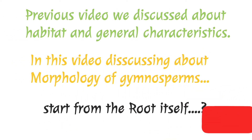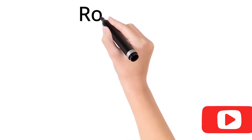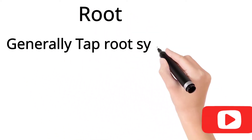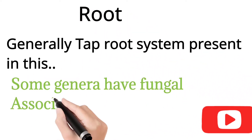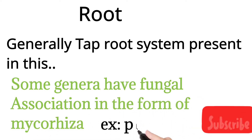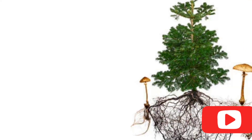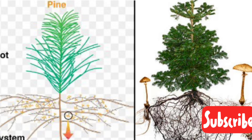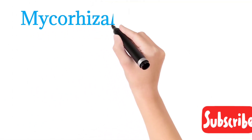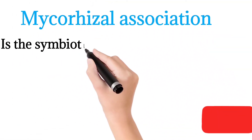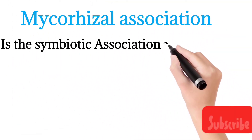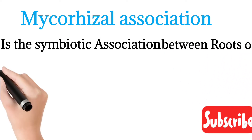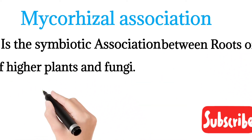Starting from the roots, they generally have a taproot system. Some genera have fungal association in the form of mycorrhizae — for example, Pinus. In Pinus plants, mycorrhizal association is seen in the root system. You can see in this picture — mycorrhizal association is a symbiotic association between the roots of fungi and the roots of higher plants.